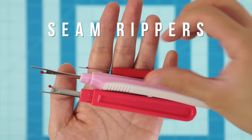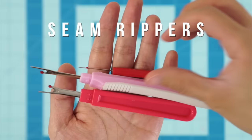The next must-have tool is a seam ripper. I own many seam rippers because they're always disappearing and I use them all the time for undoing mistakes and taking apart clothes.